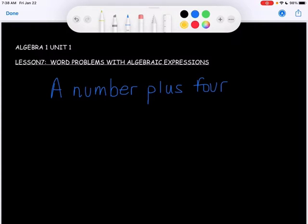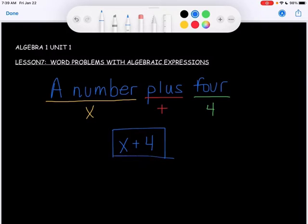I like to diagram with different colors. So a number represents some value that I don't know what the value is, but it's a variable. So I usually let X represent the unknown value. You can use any letter, but I just like to use X. Plus is an operation, so I'm going to put an addition sign there. And then four is just the number four. There's nothing else going on here - there's no switch words, there's no grouping words. So we can just write it exactly as it is. X plus four. So X plus four is a number plus four.